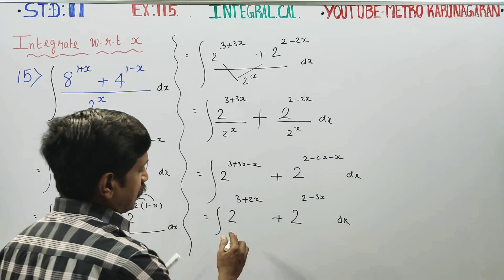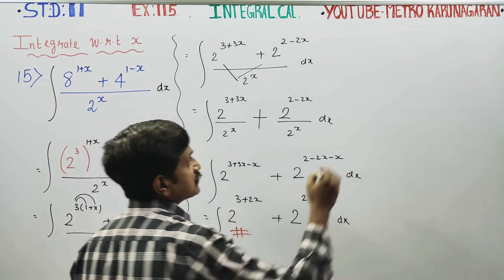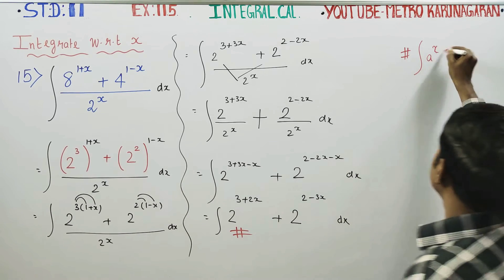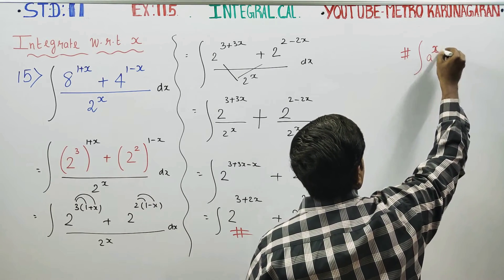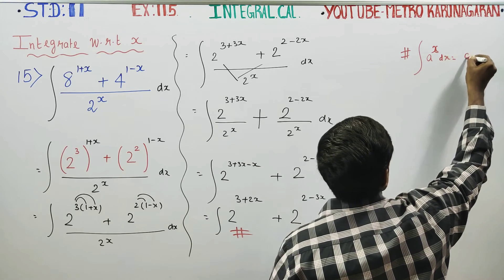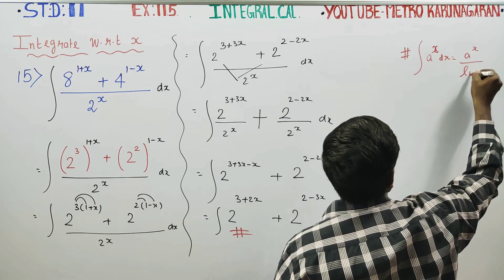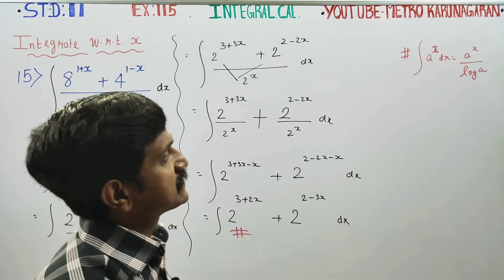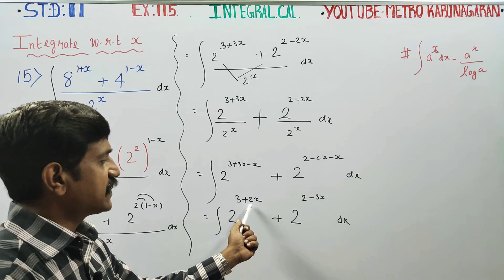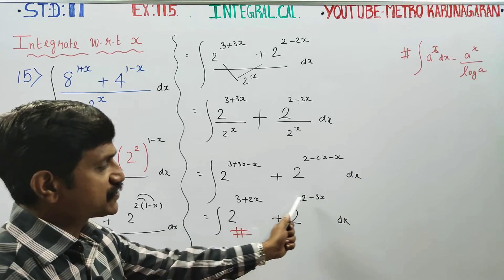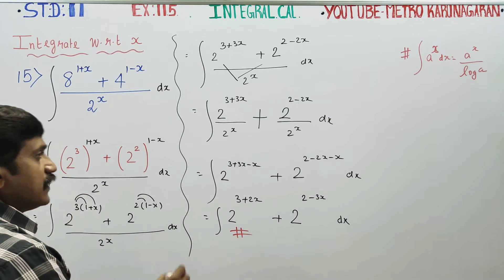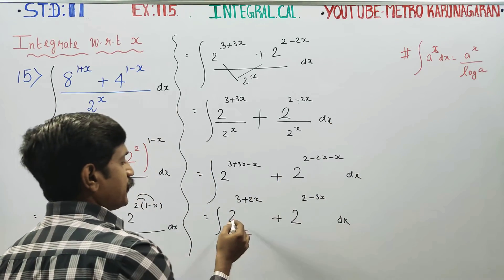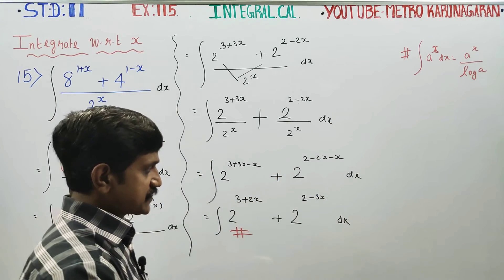We know the formula for this. Integration of a power x dx is equal to a power x divided by log a. This is the formula. If you have a linear function in the exponent, you can apply this direct formula.